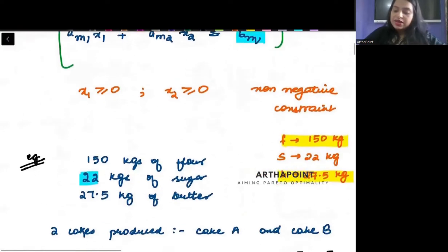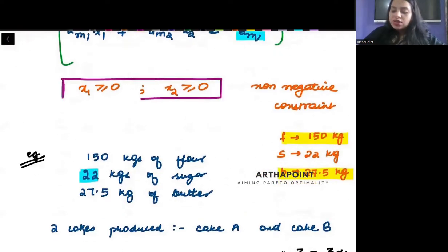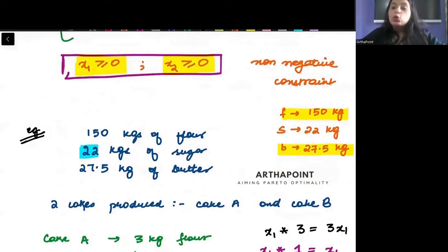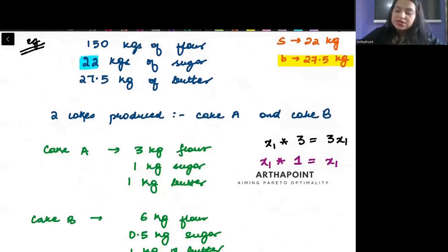At the same time, this is a non-negativity constraint which says that your x1 should be greater than equal to 0 and x2 should also be greater than equal to 0. They should be non-negative. They should not be negative. Right beta. Okay. Now let's take an example. This is the first example that is given in the book.